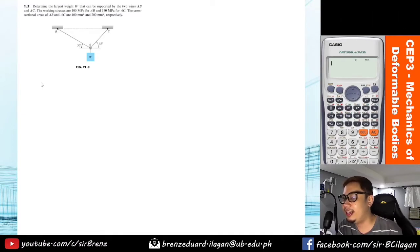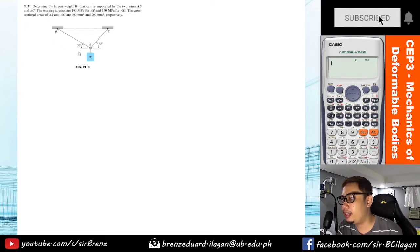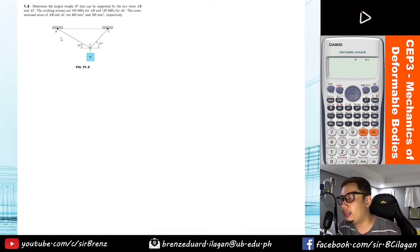The working stresses are 100 megapascals for AB and 150 megapascals for AC. The cross-sectional areas of AB are 400 and AC is 200 respectively. So again, the required in this problem is to determine the largest weight W.